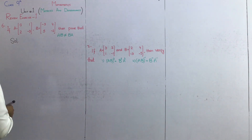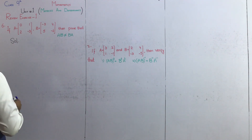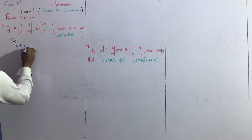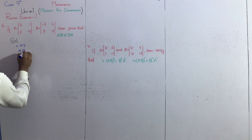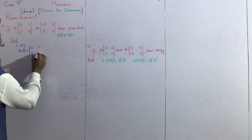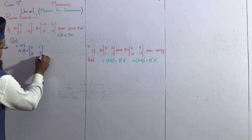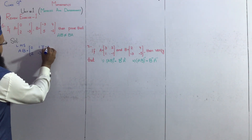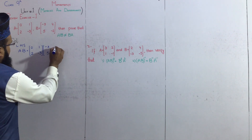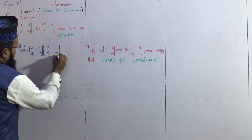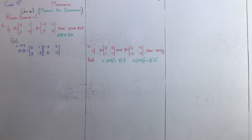Ab hamare paas left hand side jo hai wo mein given hain — kya left hand side? A times B. Ab A matrix hume given hain: first row, first column 0, second column 1 aur minus 3. Next B matrix bhi given hain: minus 3, 5 first column; second column 4 aur minus 2. Ab in dono matrix ko multiply karna hai.